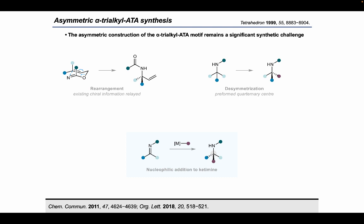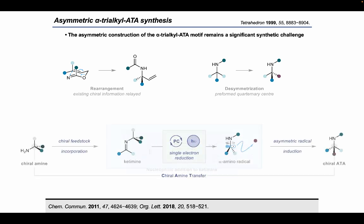Traditionally this has resulted in the construction of alpha trialkyl alpha tertiary amines either via molecular rearrangement, where the existing stereochemical information is relayed to the newly forming alpha tertiary center, or through desymmetrization of a prochiral alpha tertiary amine by remote functionalization. A more direct approach involves the asymmetric addition of nucleophiles to preformed ketimines. Whilst this has been very successful for aryl alpha tertiary amine synthesis, it is more limited for molecules with aliphatic substituents. Despite these restrictions, ketimines are attractive precursors for alpha tertiary amines as they can be simply generated from a wide range of ketone and amine feedstocks, allowing for a general and modular approach.